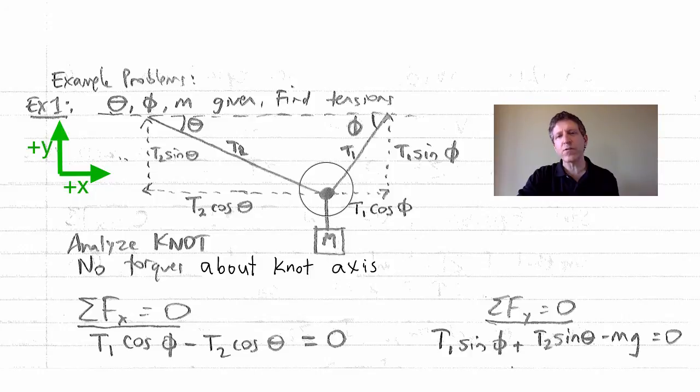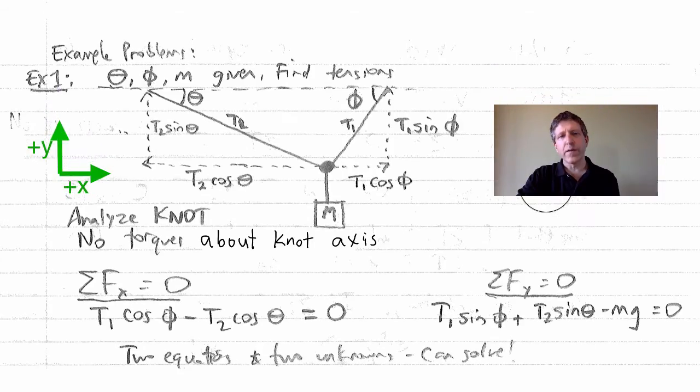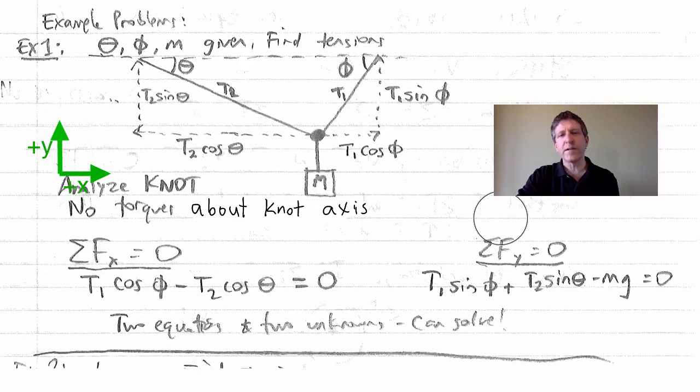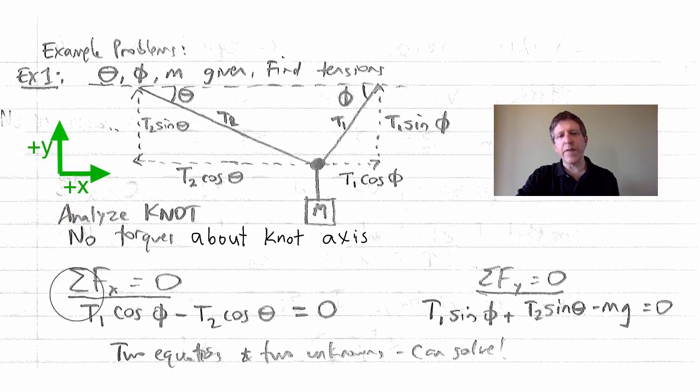So we can actually solve this with simply two equations, and again, it will always be the same three equations, and we, this time, we only need two of them. There's no torques about the knot axis, so all we're going to have to do is say the net force in the x direction equals zero, and the net force in the y direction equals zero.